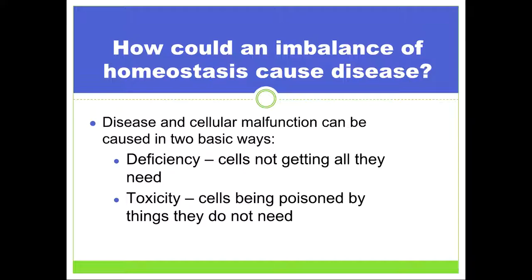Now let's look at how an imbalance of homeostasis could cause disease. Disease and cellular malfunction can be caused in two ways — highlight these for your test. Deficiency: the cells not getting what they need to properly function. Or toxicity: the cells being poisoned by things that they do not need. Going back to the cell membrane and how things get into and out of the cell — if things are not getting into the cell by diffusion, facilitated diffusion, or active transport, you're going to have a deficiency. If they can't get out, you're going to have toxicity.